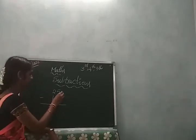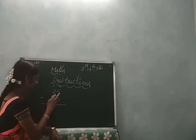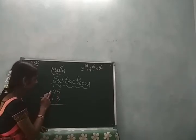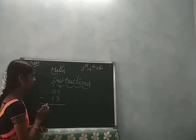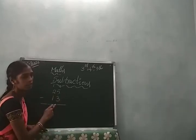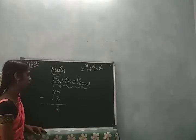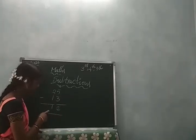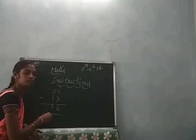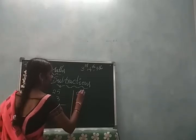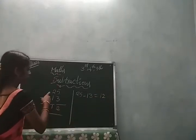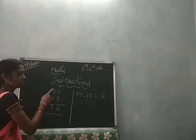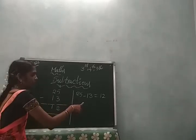Okay children, this is the ones place and the tens place. 25 minus 13. 25 means 5 ones and 2 tens. 13 means 3 ones and 1 ten. So 5 minus 3 is 2, and 2 minus 1 is 1. So 25 minus 13 is equal to 12. 12 means 2 ones and 1 ten.